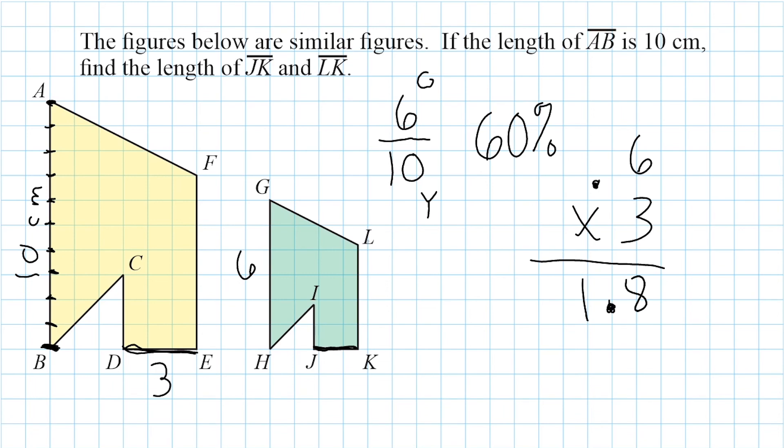And for line segment LK, it will be 60% of line segment EF. And we know that EF is 7 so we can take 60% of 7 and that would give us 4.2. So when finding the unknown length of similar figures, you have to start by determining the scale factor and then from there you can set up a proportion to solve or you can solve by using percentages.